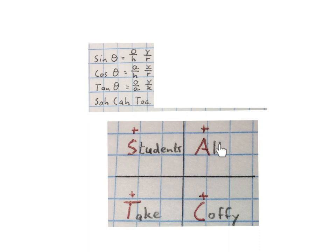Here all the ratios are positive, sine and cosecant is positive, tan and cot is positive, and cos and sec is positive.